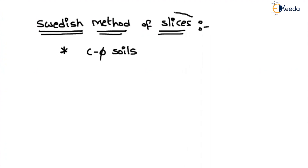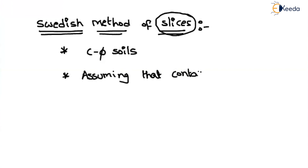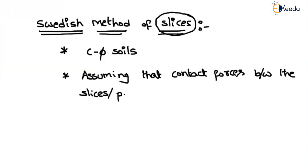The name itself says 'method of slices' — the entire failure plane is divided into a number of parts. We will study the stability of each single part, and then add the effect of all the parts using summation. One important assumption is that the contact forces between the slices or parts are neglected.